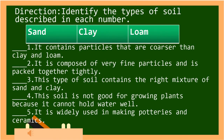Now, let's try to answer some questions. Direction: Identify the types of soil described in each number. You have three choices inside the box: sand, clay, and loam.